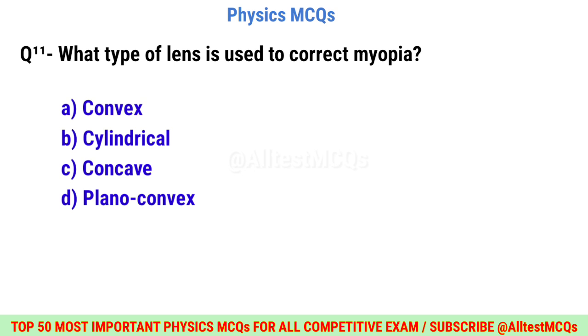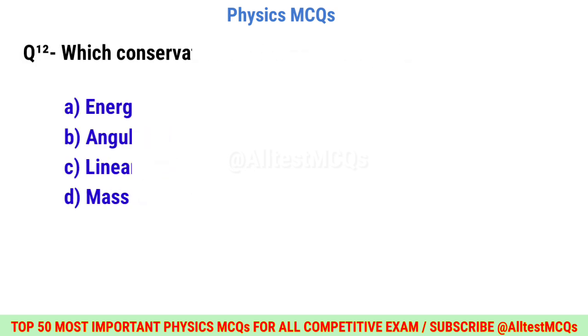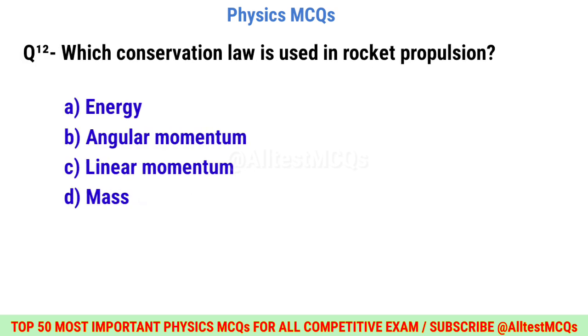Question number eleven: What type of lens is used to correct myopia? Correct option is C: Concave.